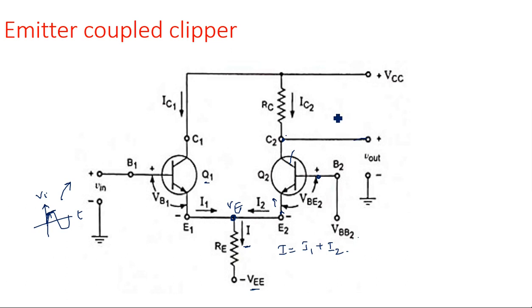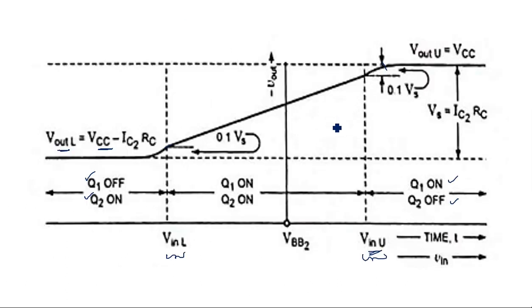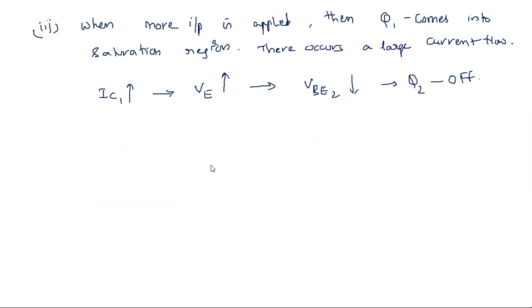The gap between the two output levels corresponds to IC2 × RC. When Q1 is on and Q2 is off, VOUT upper equals VCC. The difference between the two output levels — when input is below the lower limit versus above it — is IC2 × RC.